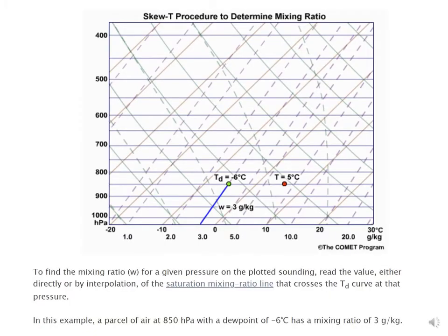Here we have our skew-T diagram — a section of it going from essentially 100 kilopascals to 40 kilopascals on the vertical axis. We have two axes labeled at the bottom: temperature ranging from minus 20 degrees Celsius to positive 30 degrees Celsius, and the mixing ratio in grams per kilogram, ranging from 1 to 20 grams per kilogram.